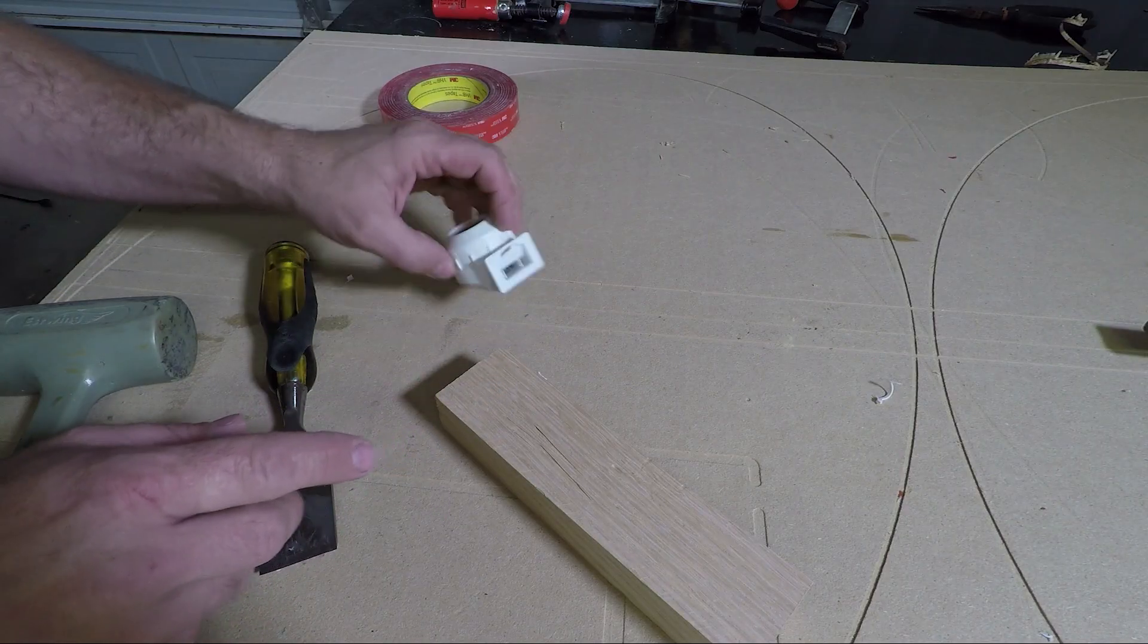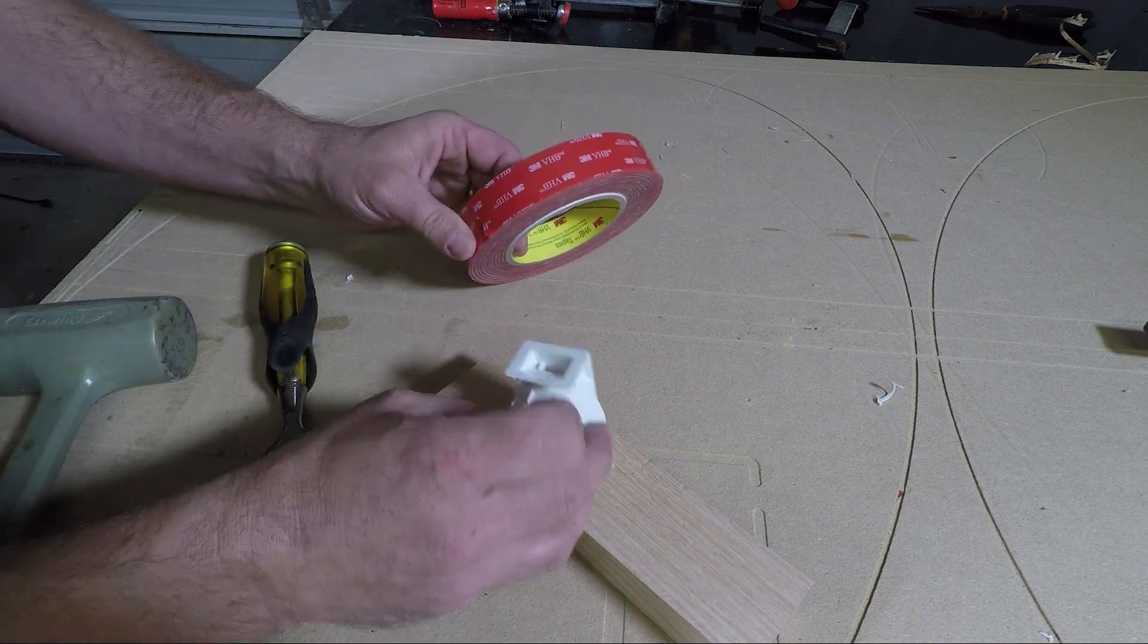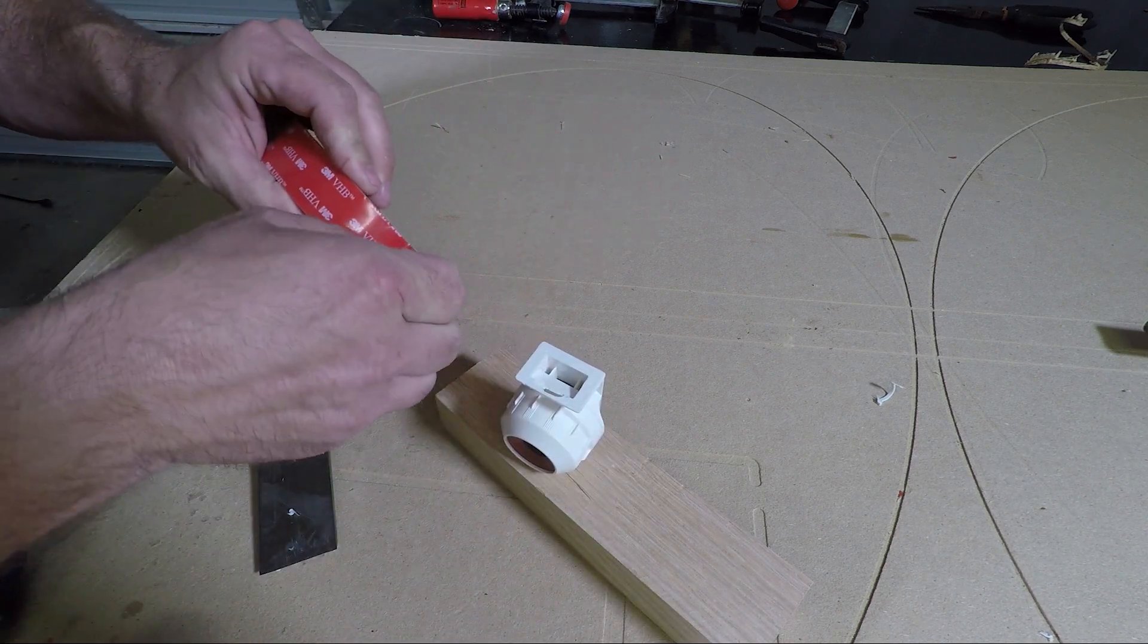Now that I have that piece removed from the base, I'm going to go ahead and attach a little bit of double sided tape and this is how I'll connect this piece to the canopy.